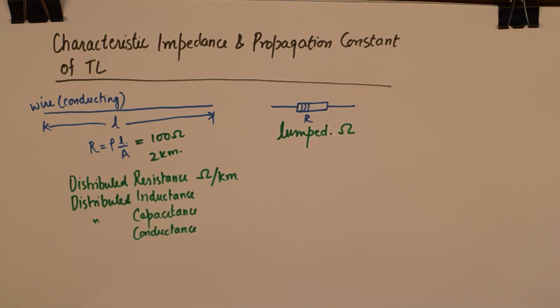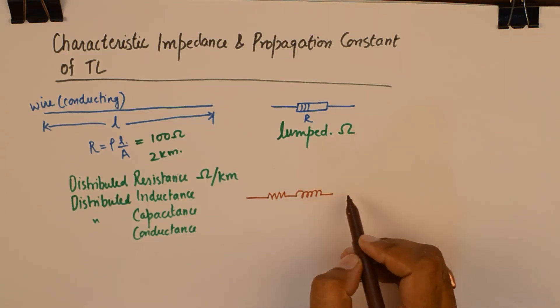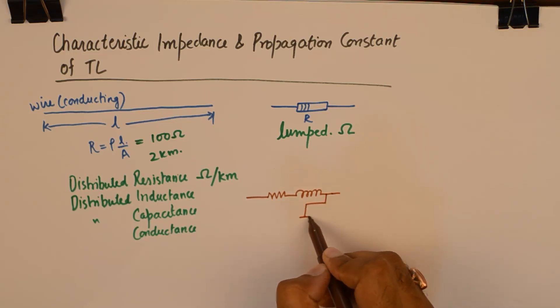And how do we represent this characteristic impedance of a transmission line? It is represented using the equivalent circuit of a transmission line which is drawn as resistance and inductances in series and capacitances and inductances in parallel.